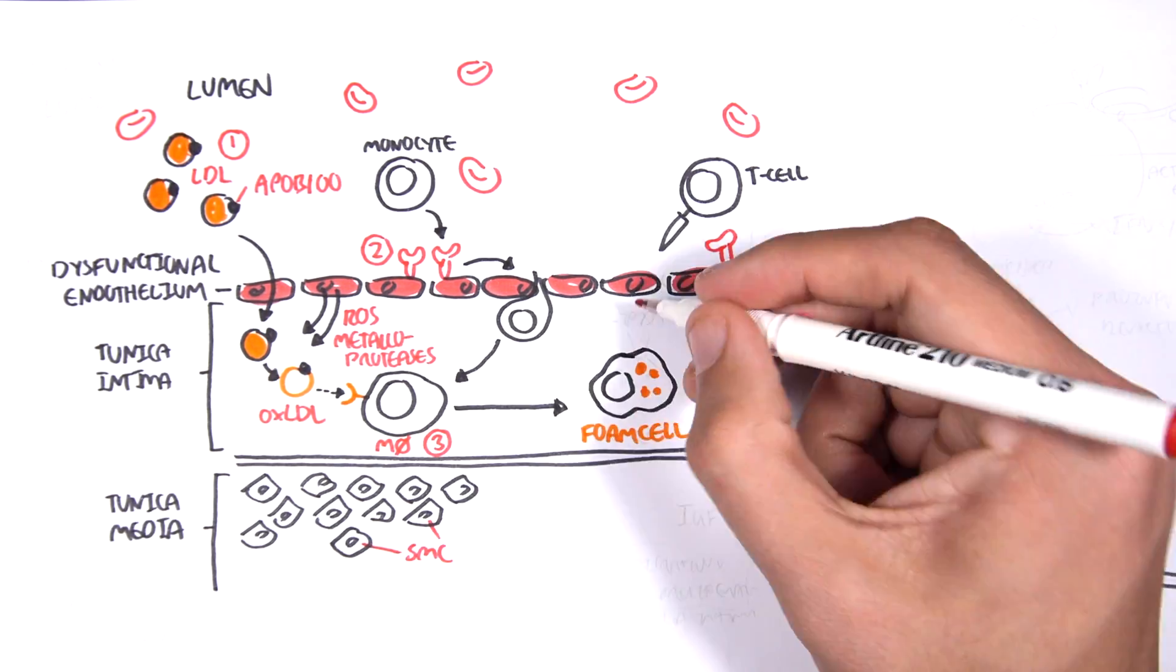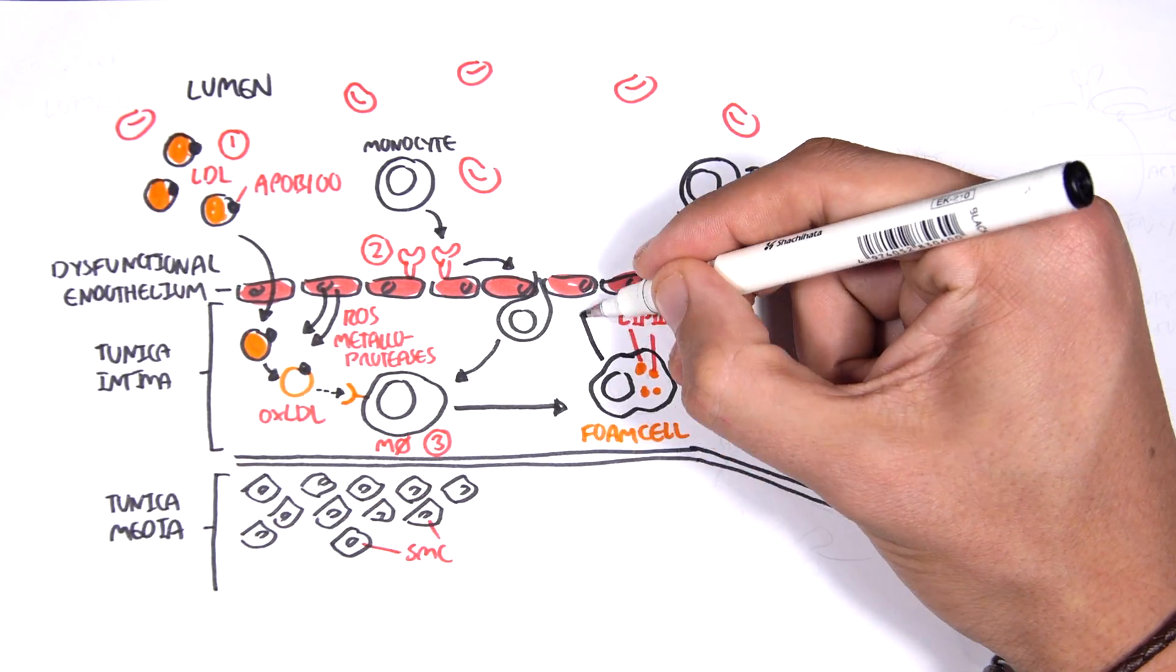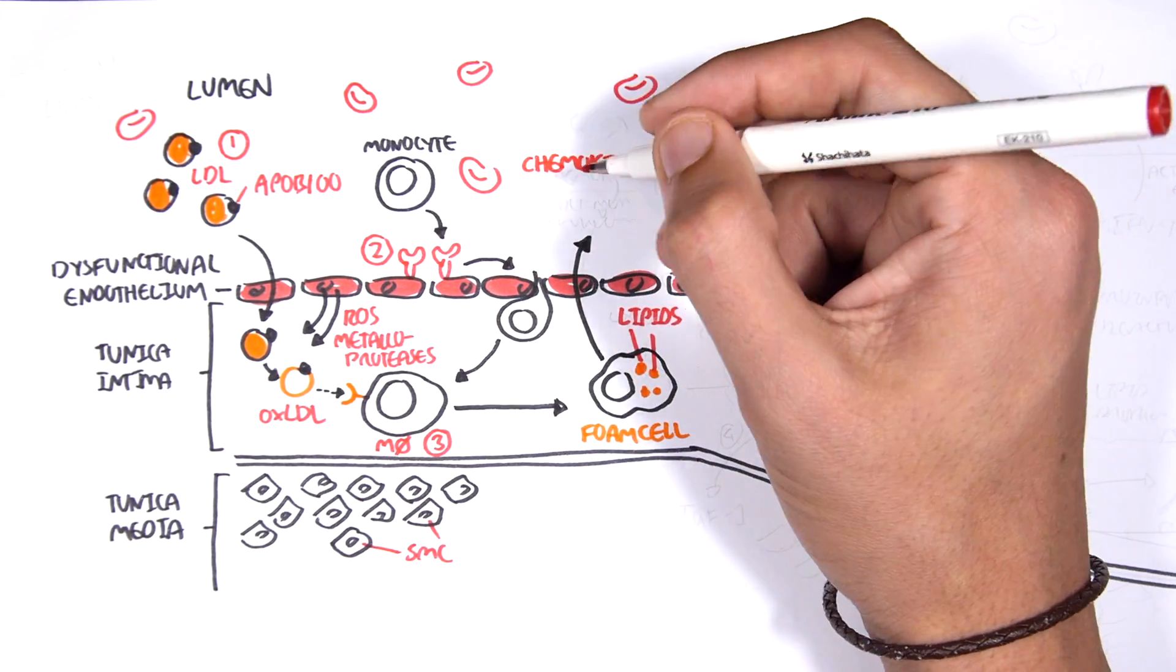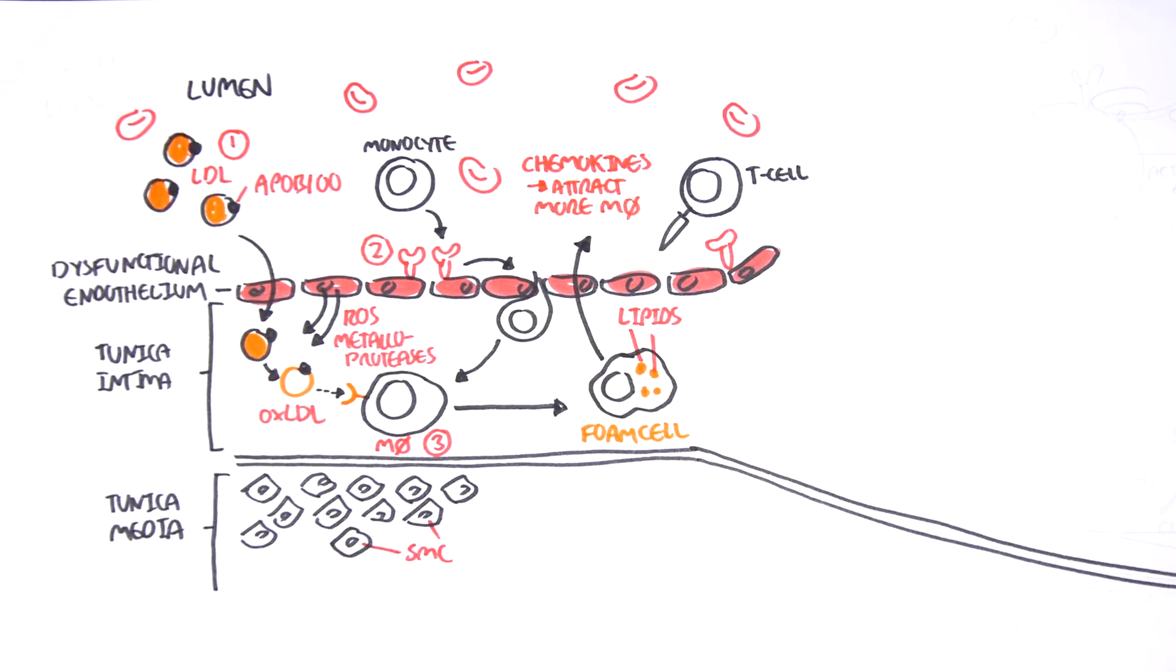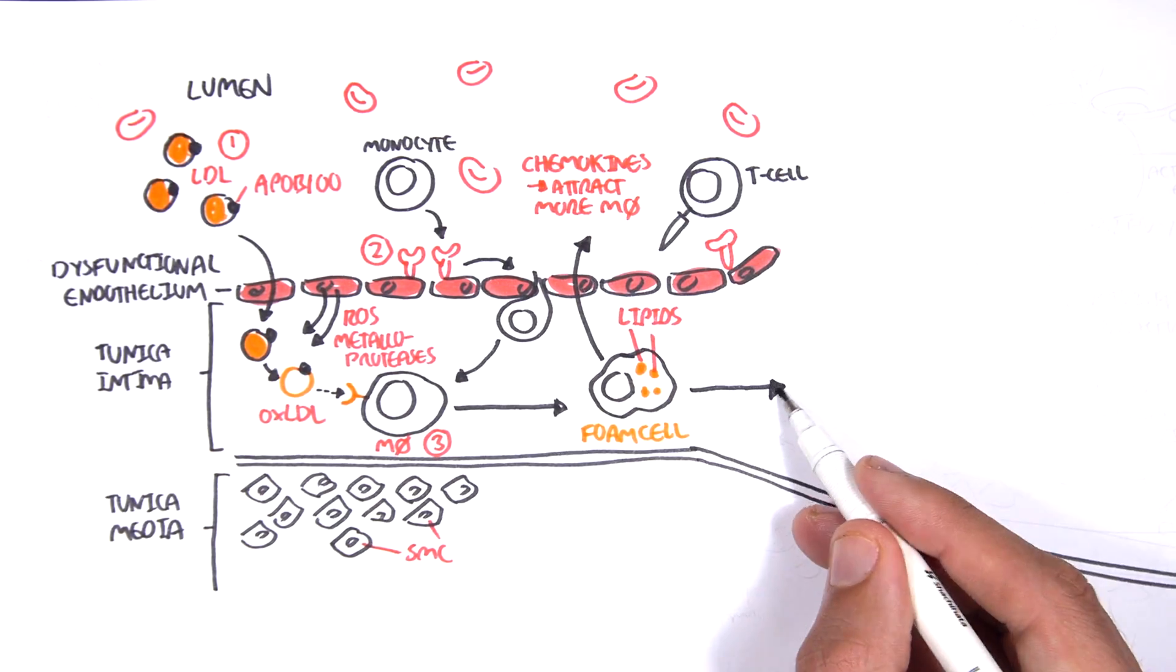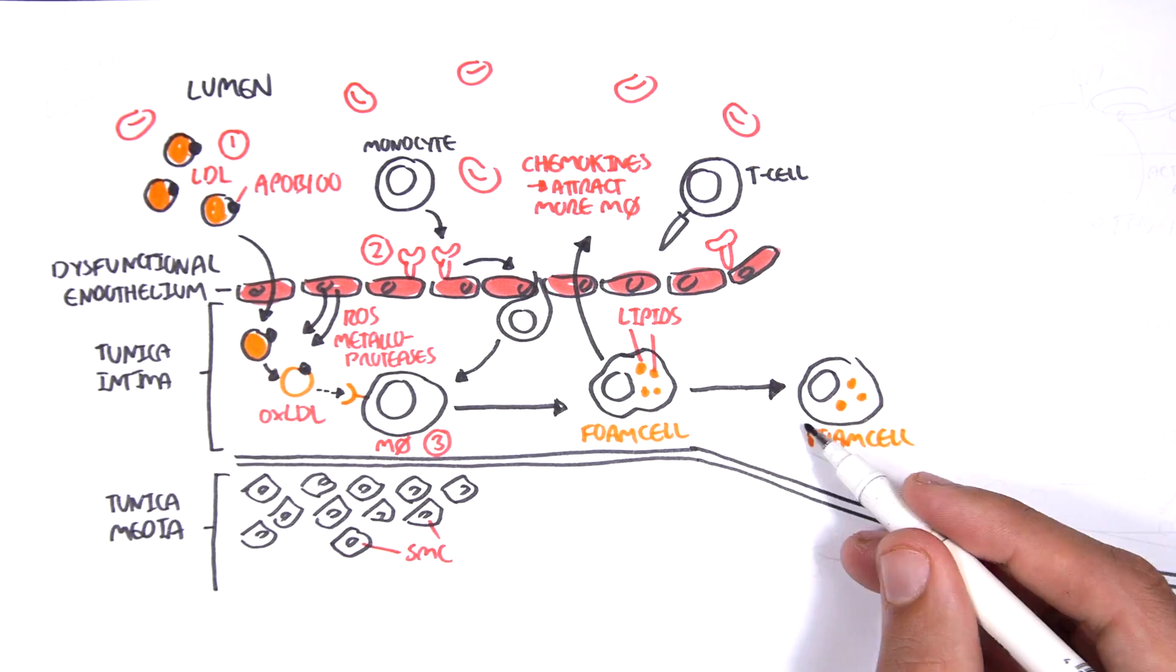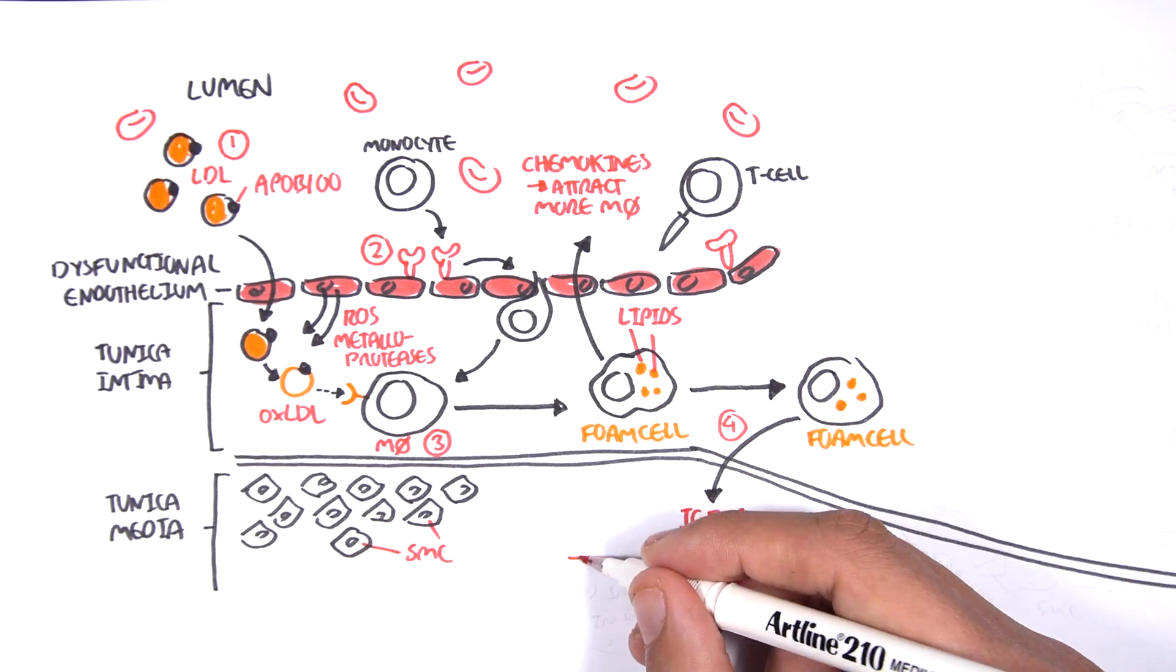Now, foam cells, they are basically macrophages containing lipids, and they have many, many functions. One of which is that it will release chemokines to attract more macrophages. Foam cells can also, step four here I'm drawing, release IGF-1, which is basically a growth factor.